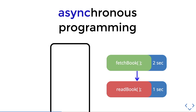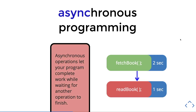The async or asynchronous approach is represented as the bright blue arrow. Now you can see that the fetch book function runs first, and after a successful fetching of a book, the read book function is activated. You can see the text on your phone, which describes async programming — letting your software complete its work while waiting for another operation to finish first.